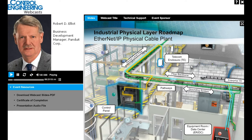Translating this to the actual shop floor environment, this is a typical factory floor layout showing where key physical layer elements will be located. On the bottom right-hand side, we see a micro data center — effectively an equipment room for shop floor computing equipment. Fiber would come from this along pathways to a zone enclosure, which might include switching equipment, and from there copper links would connect to each of a number of control panels.